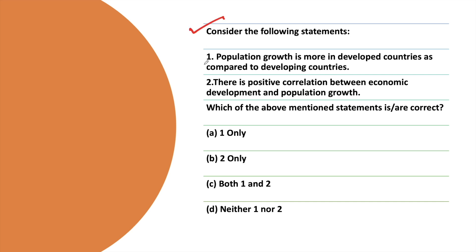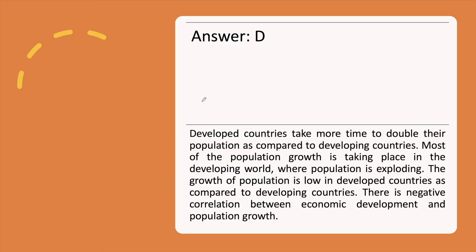The next question: Consider the following statements. Statement 1: Population growth is more in developed countries as compared to developing countries. Statement 2: There is a positive correlation between economic development and population growth. Which of the statements is correct? The correct answer is option D, with the explanation.